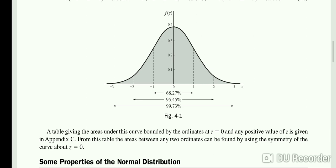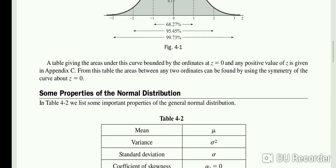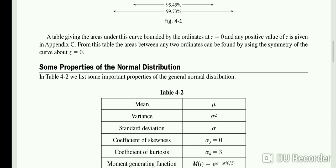A table giving the areas under this curve bounded by the ordinate at z equals 0 and any positive value of z is given. We can find the value of z from a table that is already prescribed in any statistics book.